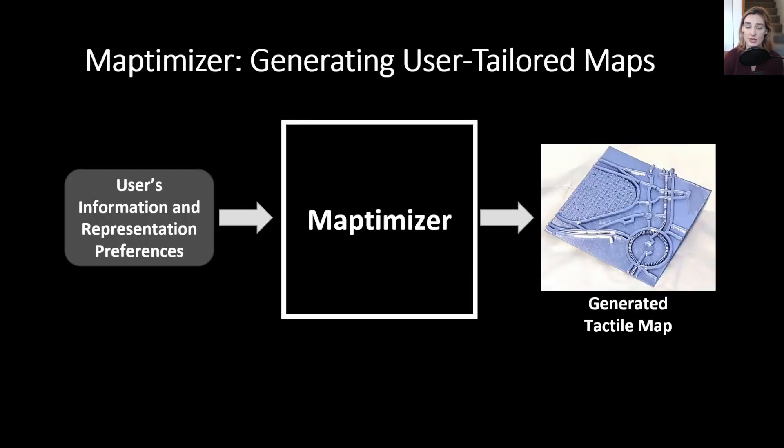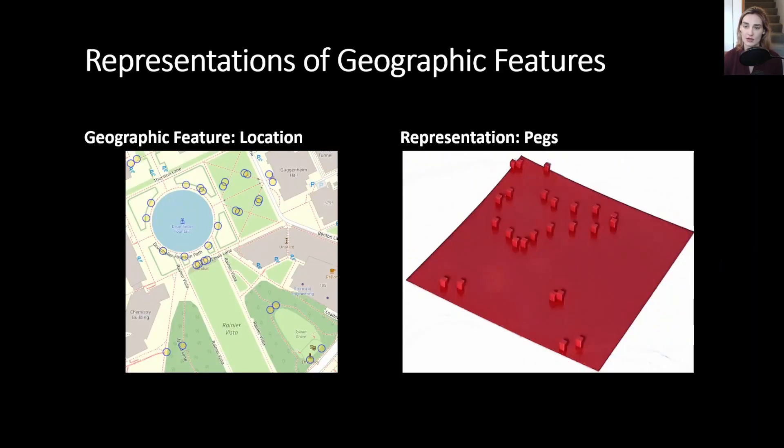Maptimizer is a generative design tool that takes in information from a blind or low vision user about their preferences for information and how that information is represented, and generates a tactile map that meets those needs. It does this by pairing tactile representations to geographic features.